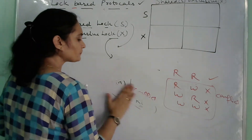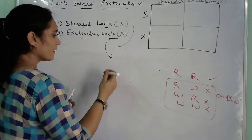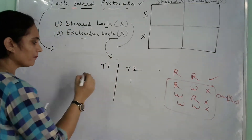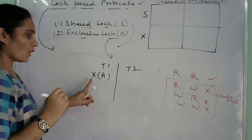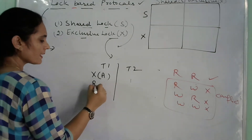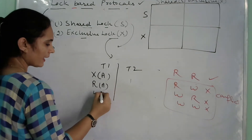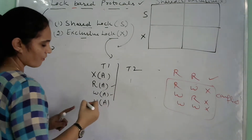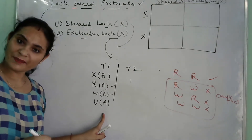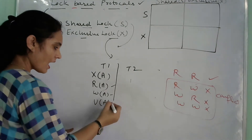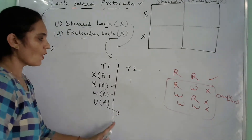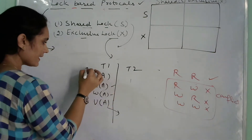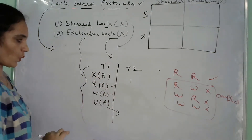Let's see another example. Here we have transaction T1 and transaction T2. T1 performs read A and write A, and after performing the write operation, it unlocks data item A. After this, transaction T2 can acquire any lock and perform any operation.